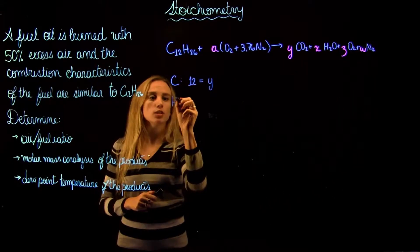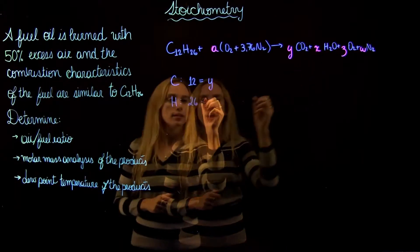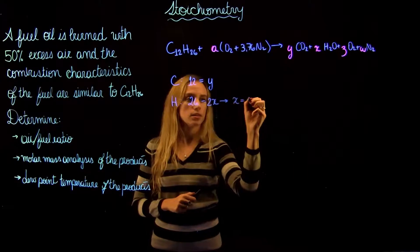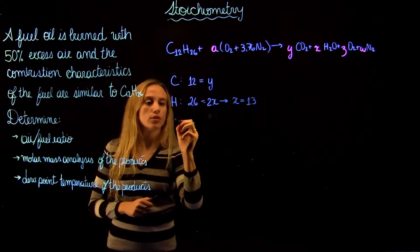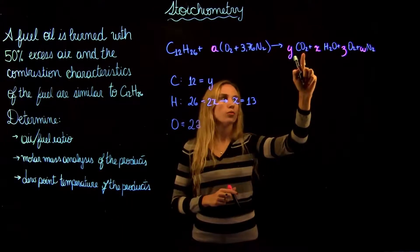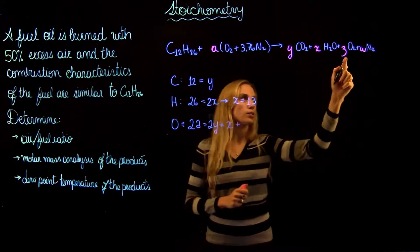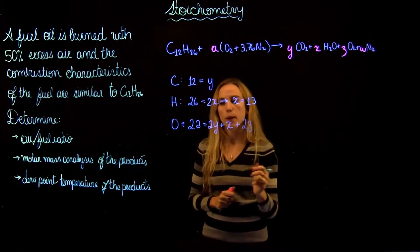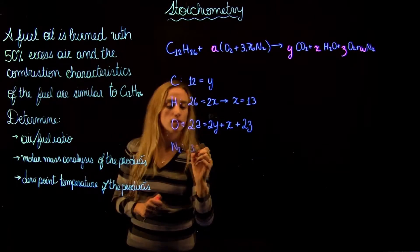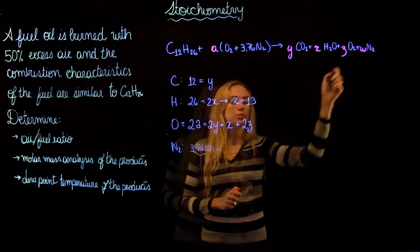For hydrogen H, we have 26 in the reactants and 2X on the product side, so X equals 13. For oxygen O, we have 2A on the reactant side, which equals 2Y plus X plus 2Z on the product side. For nitrogen, 3.76A equals W.